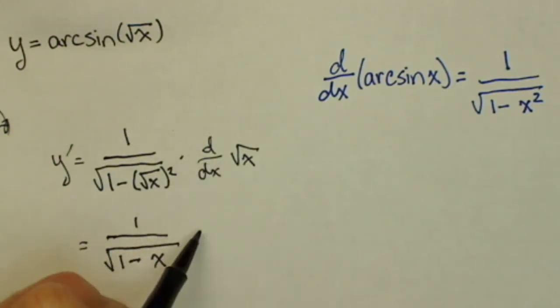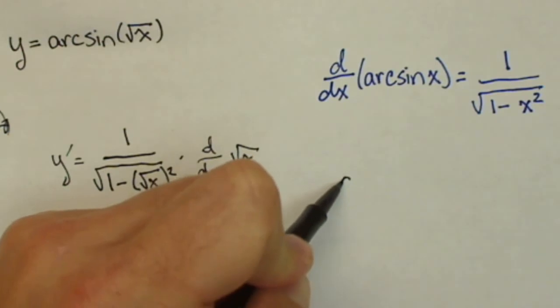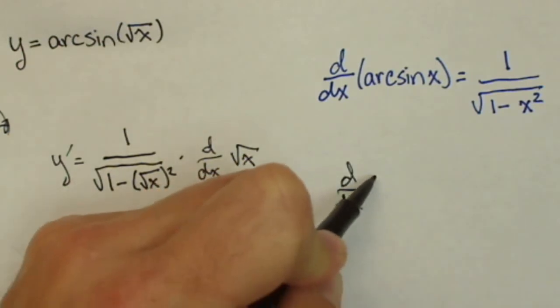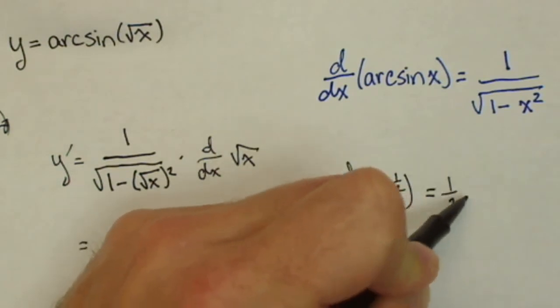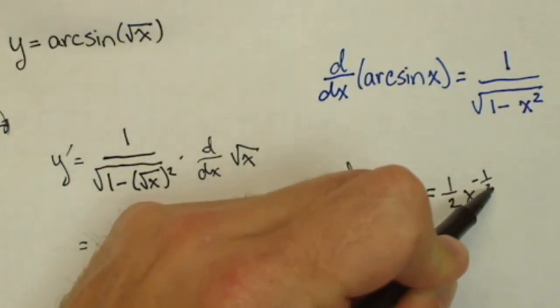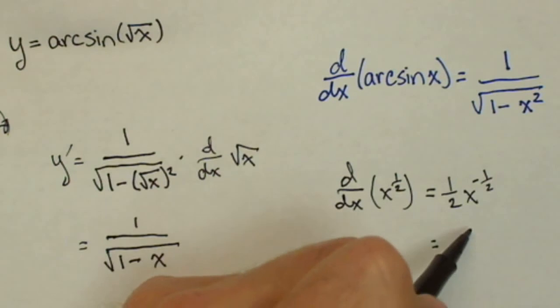The derivative of square root of x, or remember now we're doing the derivative of x to the 1 half, which is 1 half x to the minus 1 half, or 1 over 2 square root of x.